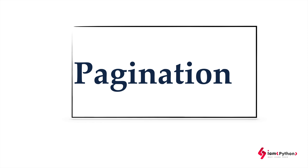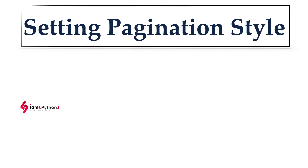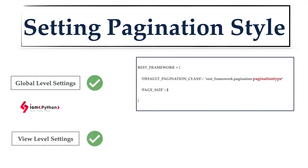Now let's discuss the pagination concept. Pagination is important when you have a lot of data and you want to display, say, 10, 20, or 30 records per page. To set the pagination style in Django REST Framework, there are two ways: one is global-level settings in settings.py, and another is view-level settings.